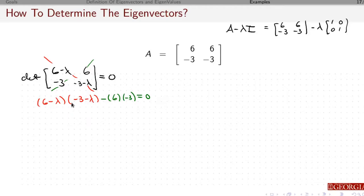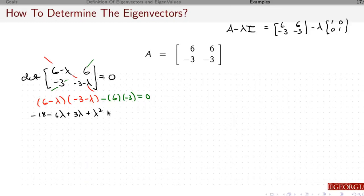Now we've got the algebra to work out. I don't see any clever things to do to factor, so I'm just going to grind it out and foil this. I've got minus 18, this is going to be minus 6 lambda, plus 3 lambda, plus lambda squared. Let me verify: 6 times minus 3 is minus 18, 6 times minus lambda, minus lambda times minus 3, minus lambda squared — is that correct? It's going to be minus a minus 18.